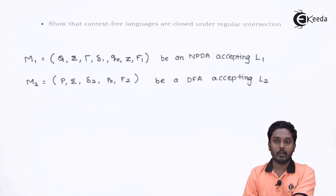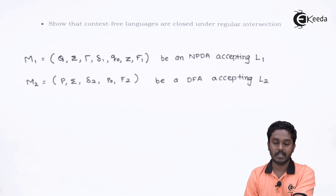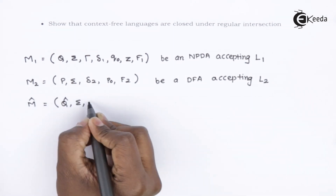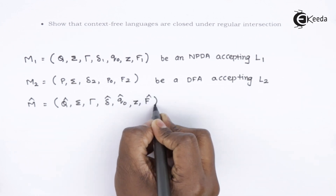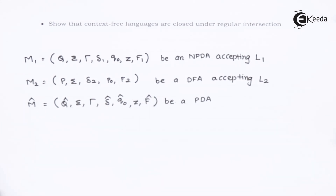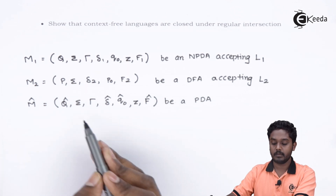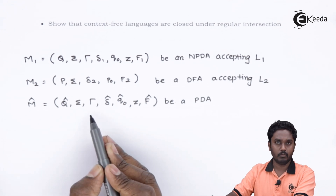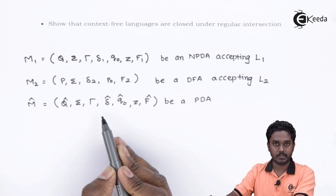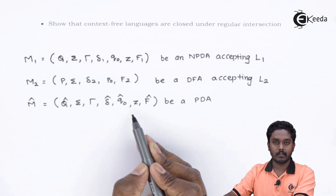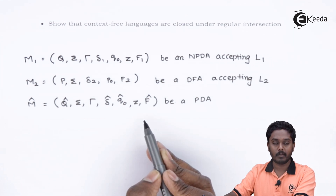L1 is accepted by an NPDA, so L1 is a context-free language. L2 is accepted by a DFA and hence L2 is a regular language. Now we are going to construct a new machine, M-cap. The components of M-cap are: Q-cap — the set of states; Sigma; TAU; DELTA-cap — the transition function; Q0-cap — the initial state; Z — the initial stack symbol; and F-cap — the set of final states.